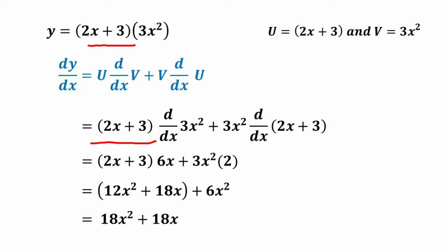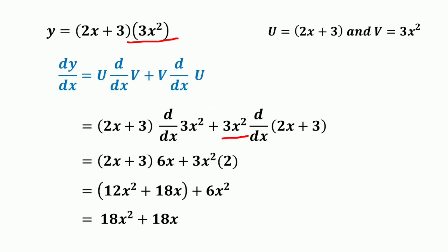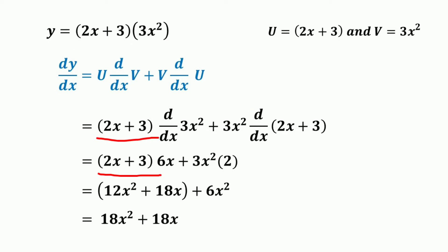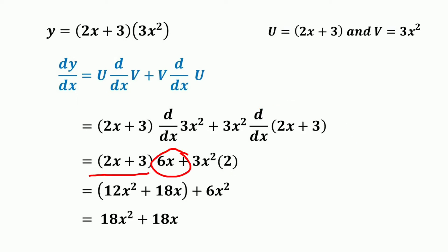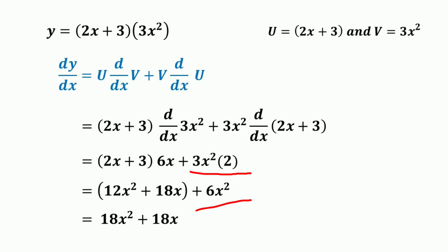So: (2x + 3) into d/dx of 3x squared, plus 3x squared into d/dx of (2x + 3). This gives (2x + 3) into 6x, plus 3x squared into 2. Multiplying out: 2x times 6x equals 12x squared, plus 3 times 6x equals 18x, plus 2 times 3x squared equals 6x squared.